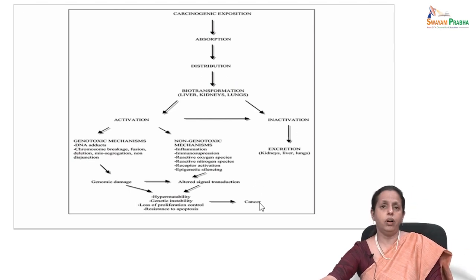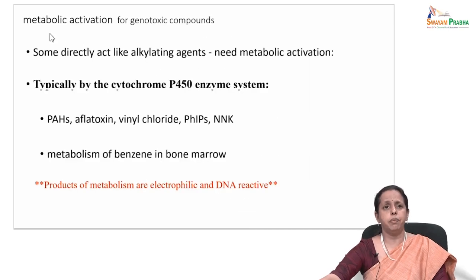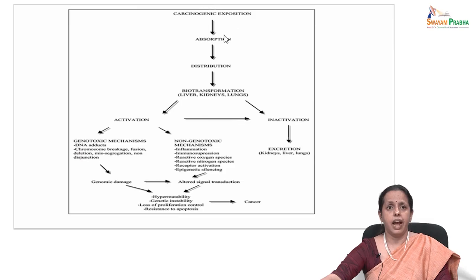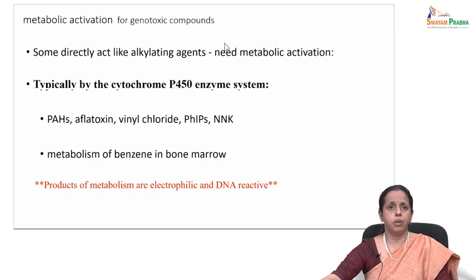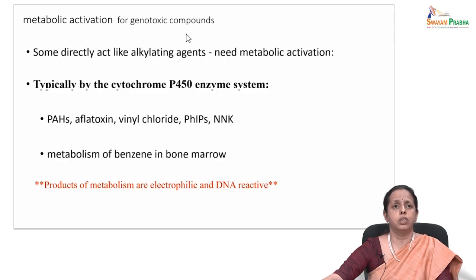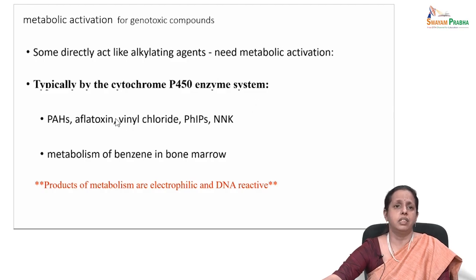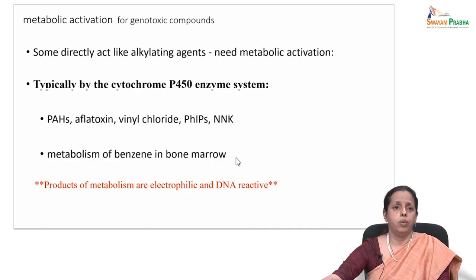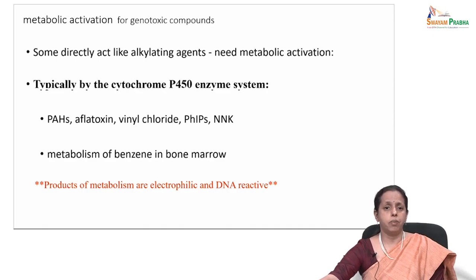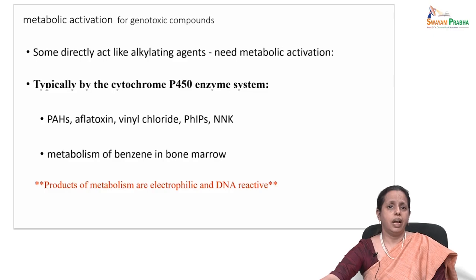For metabolic activation of genotoxic compounds: some directly act like alkylating agents, while others need metabolic activation. They usually go through cytochrome P450 enzyme systems such as for PAH, aflatoxin, vinyl chloride, PhIPs, N-nitroso compounds, and metabolism of benzene in bone marrow. Products of this metabolism are electrophilic and DNA-reactive. So is a mutagen the same as a carcinogen? We know a mutation is an alteration in a coding sequence — a mutagen can cause such a change. So a carcinogen and a mutagen can be considered the same.